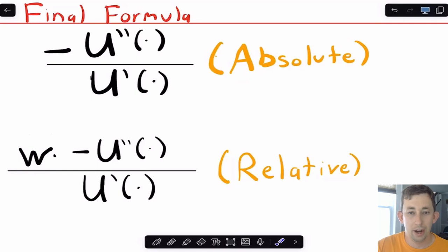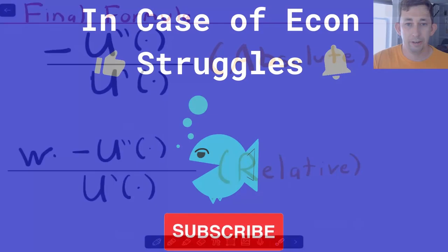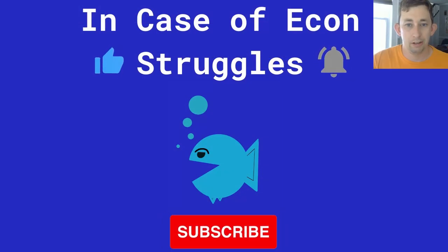Just a really quick video on Arrow-Pratt risk aversion. If there's something in particular that I didn't cover here that you would like me to cover, please put that in the comments below. But if this video or these videos in general are helping you out, please like this video, please subscribe, please put a comment below. We'll see you next time for another case of econ struggles.